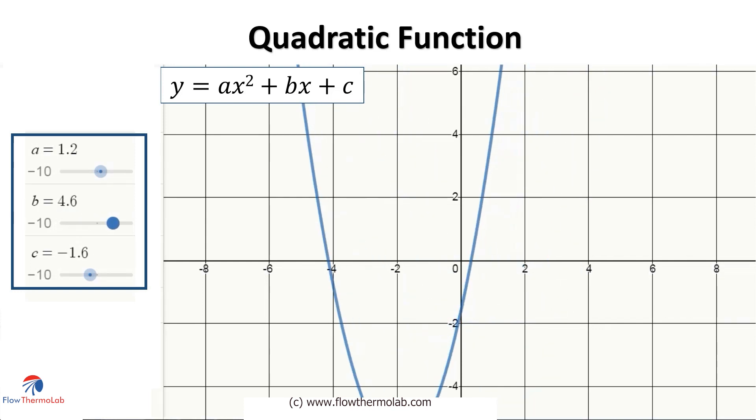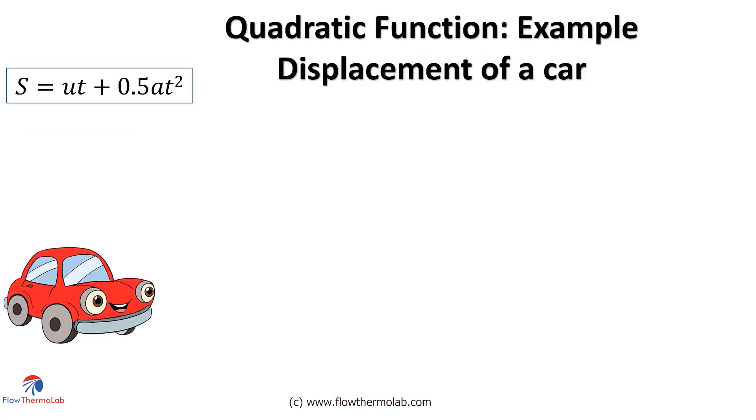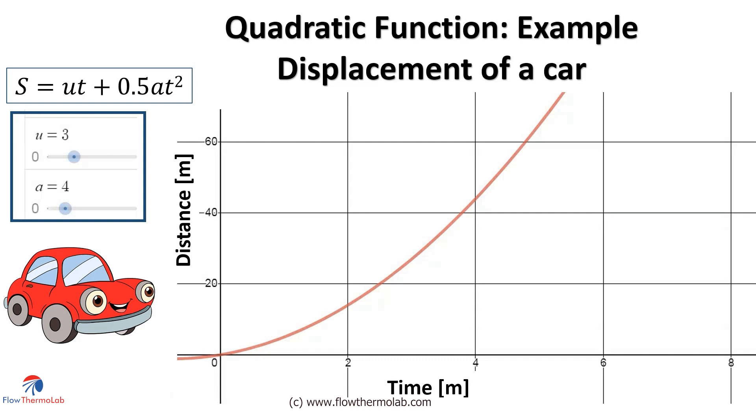An example for a quadratic function is the displacement of a car. We know this equation from our school physics: S equal to ut plus half at square. This is nothing but a quadratic equation with the variable t or time. Here u is the initial velocity and a is the acceleration. You can see that car can travel to a longer distance for the same time value if the initial velocity was slightly higher, and even longer distance if we can accelerate the car or increase the value of a here.